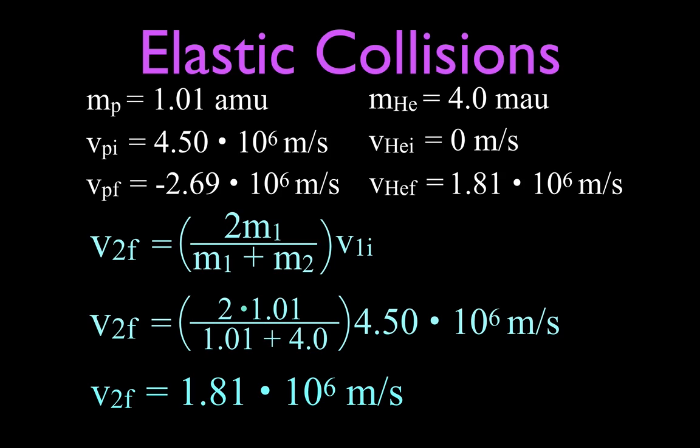All right, we had a helium nucleus at rest collided elastically with a proton that was traveling with 4.50 times 10 to the 6 meters per second. The final velocity of the proton is negative, so that means it bounces off and goes back in the other direction. And the helium, it's a more massive particle, you'll notice that it travels off to the right with a velocity of 1.81 times 10 to the 6.